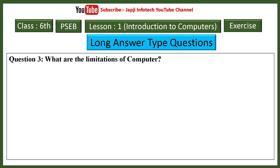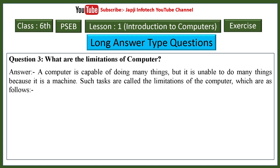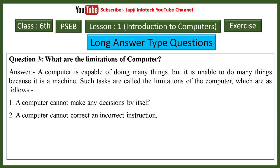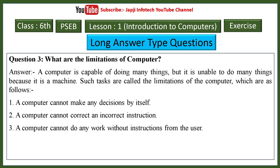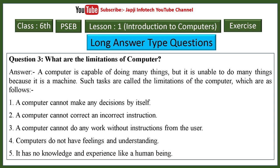Third question: what are the limitations of computers? A computer is capable of doing many things but unable to do many because it is a machine. Limitations include: a computer cannot make any decision by itself; it cannot correct an incorrect instruction; it cannot do any work without instructions from the user; computers do not have feelings and understanding; it has no knowledge and experience like a human being.